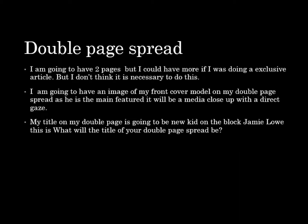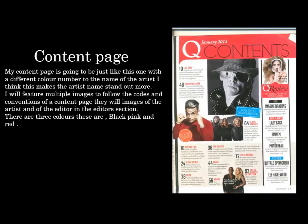My double page spread. I am going to have two pages, though I could have more if doing an exclusive article, but I don't think this is necessary as my artist is going to be new and upcoming. I am going to have an image of a model on my double page spread. As he is a main feature it will be a medium close up with a direct gaze. My title on the double page spread is going to say 'New Kid on the Block — Jamie Lowe', so people know that he is a new and upcoming artist. I will need three columns for my information, as Q magazine does it and it is a code and convention of a double page spread.